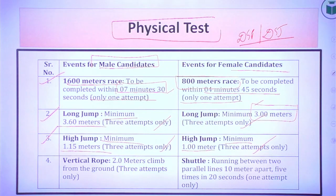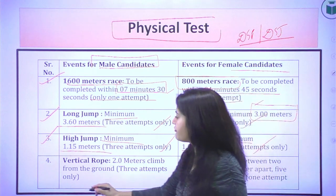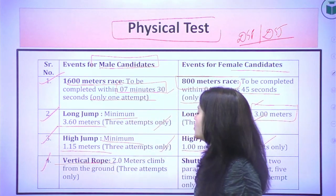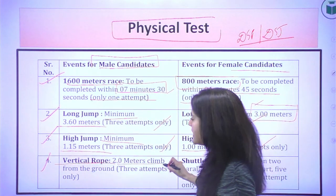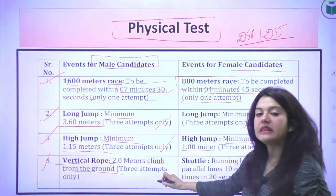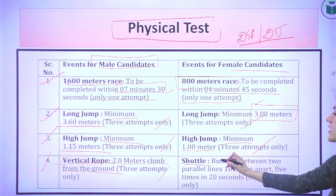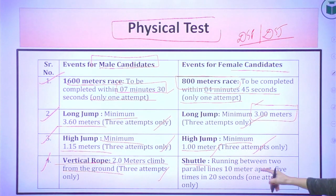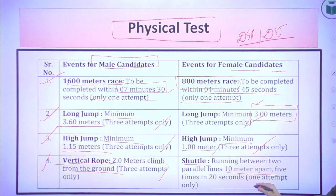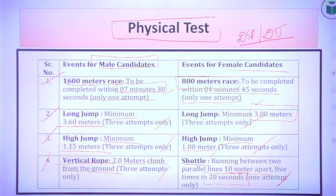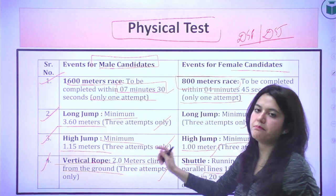The fourth physical test is the vertical rope climb — 2 meters from the ground, with 3 attempts, applicable to men. For women, instead of the rope, there is a shuttle race: running between two parallel lines 10 meters apart, 5 times within 20 seconds, with one attempt given.